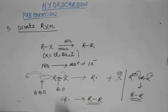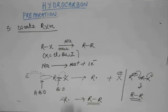So this Wurtz reaction is exclusively for sodium — you cannot take any other metal. The product is a dimer, and again it will be symmetric and will have an even number of carbons. You cannot have an odd number of carbons as a product of Wurtz reaction. All those features will be true that were true for Kolbe's electrolysis, because both ultimately form the product in the last step through dimerization.